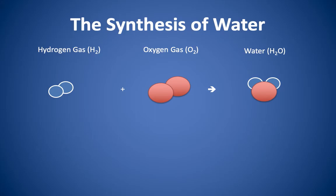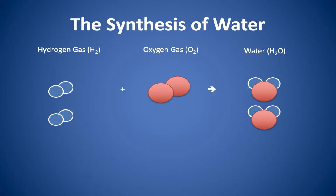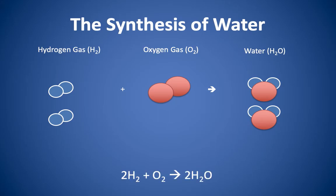So as a result, if we want to have the reaction go to completion, it's going to happen a little differently than how we have it represented here. In order for this reaction to go to completion, we would need a second diatomic hydrogen molecule, and then as a result we would end up with a second water molecule. Now we have four hydrogen atoms on the reactant side and the product side, and two oxygen atoms on both sides. We represent this with the balanced chemical equation: two H2 molecules plus one O2 molecule produces two H2O molecules.